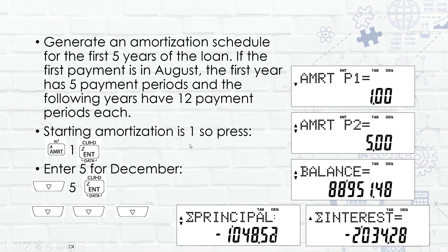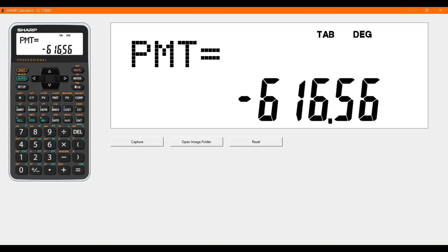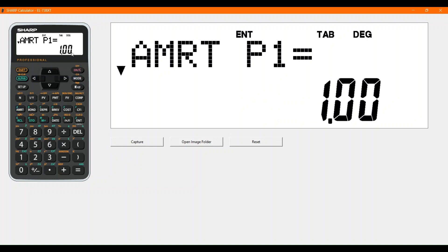Now we'll generate an amortization schedule for the first five years of the loan. If our first payment is in August, the first year has five payment periods — August, September, October, November, December. Every year following that is 12 payments. So we start at payment one and at the end of the year we have payment five, and we can see the balance, principal paid, and interest paid. Press AMRT — first payment is one, so enter 1 and press enter. Then scroll down to payment two, put in 5 and press enter.